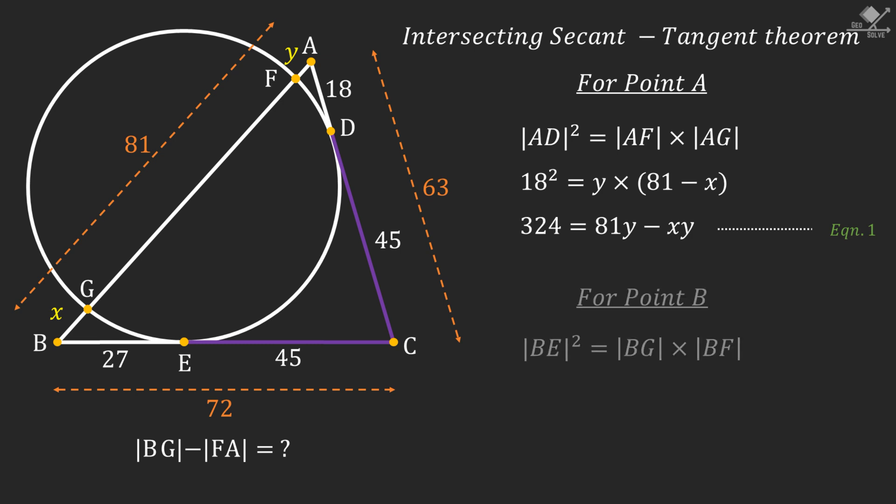Similarly, we can write BE squared equals BG times BF for point B. When we plug the values we know, we will have 27 squared equals X times 81 minus Y. And from here our second equation will become 729 equals 81X minus XY.